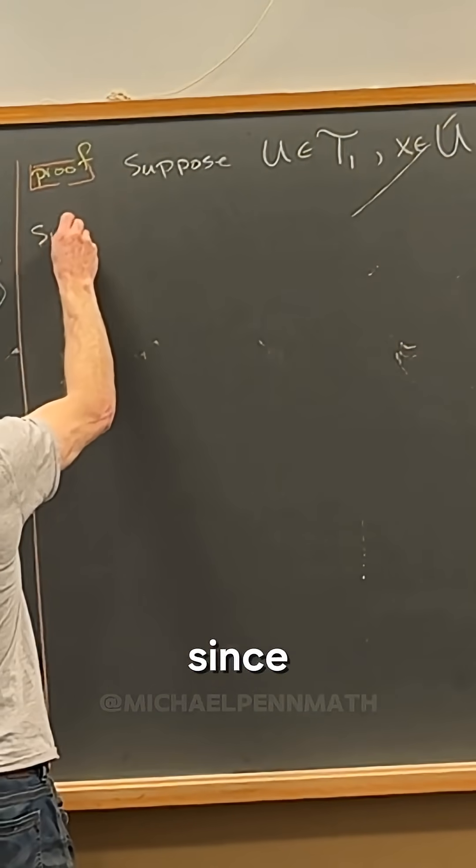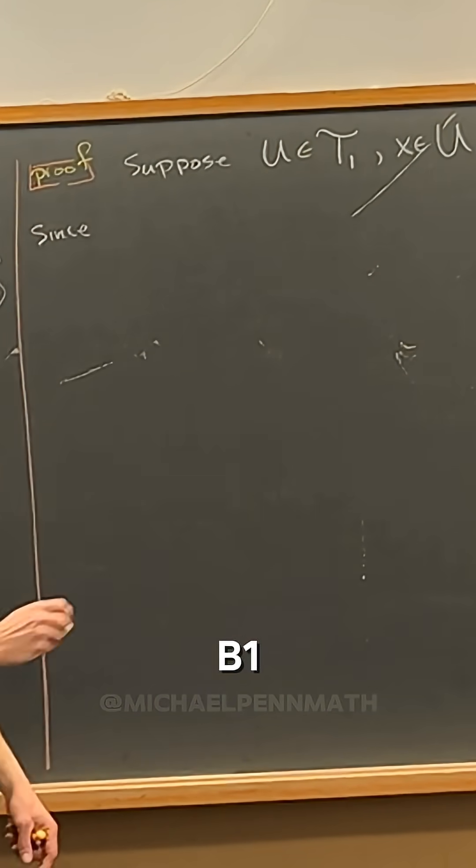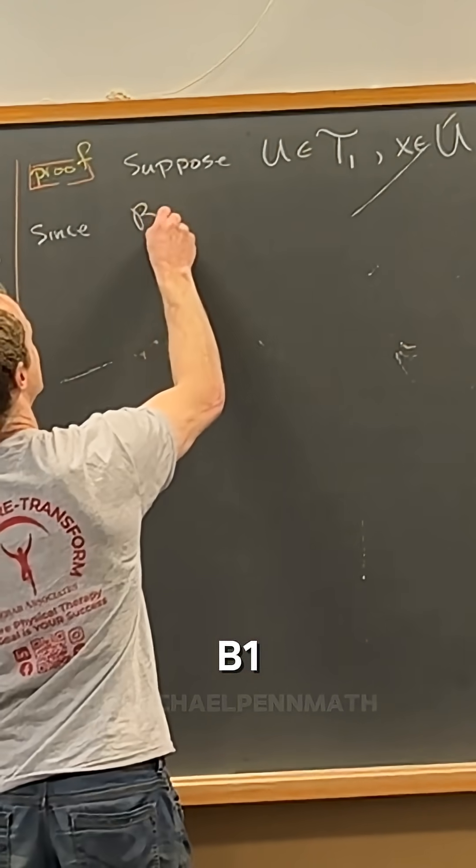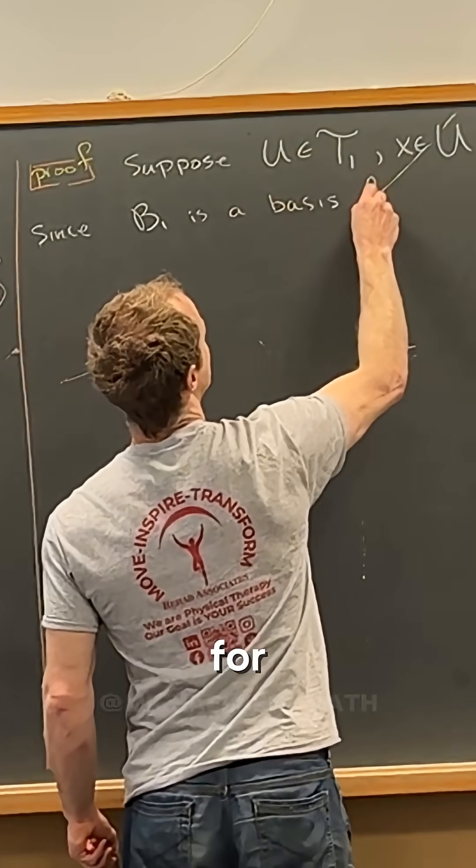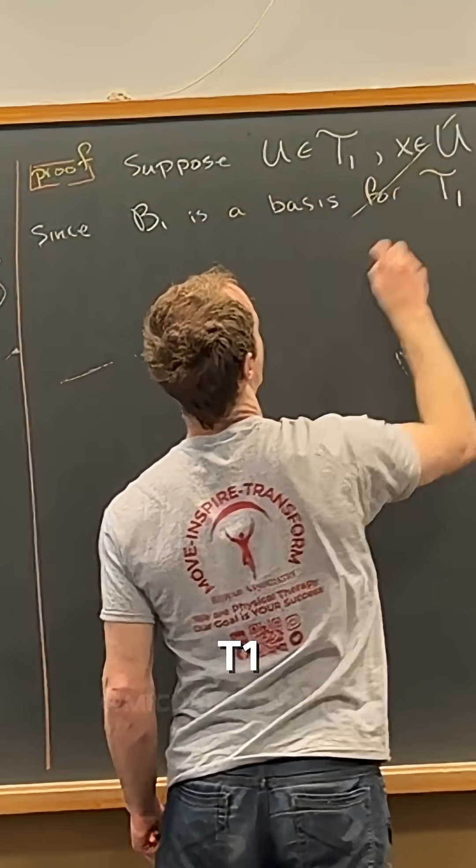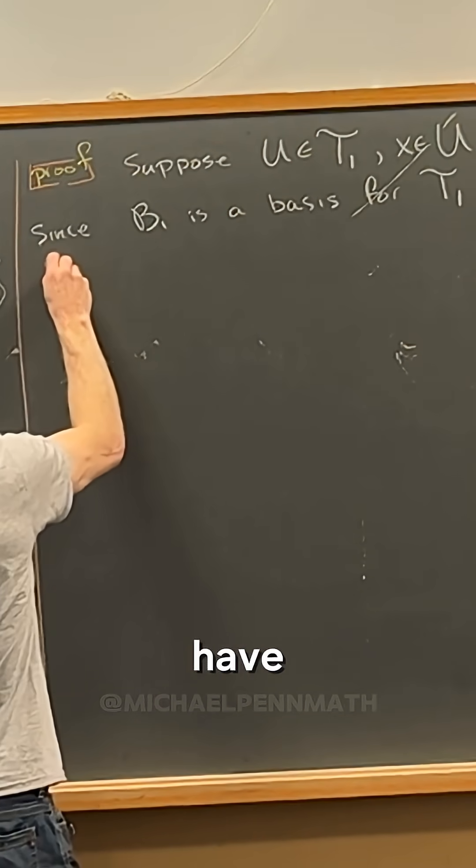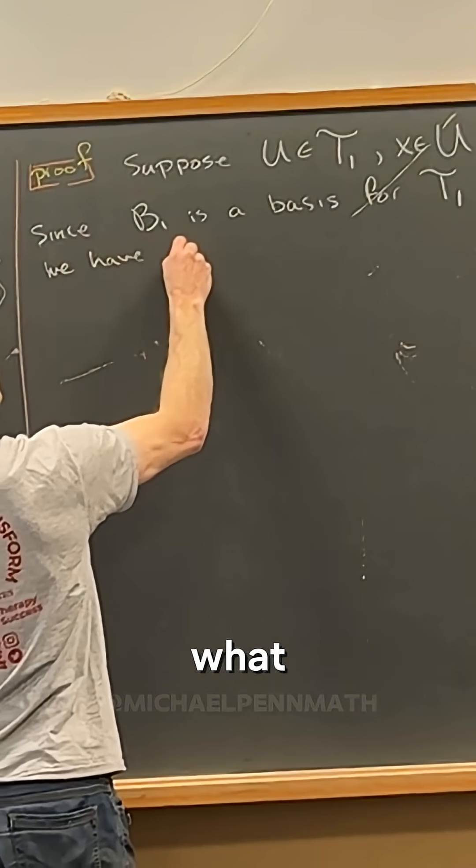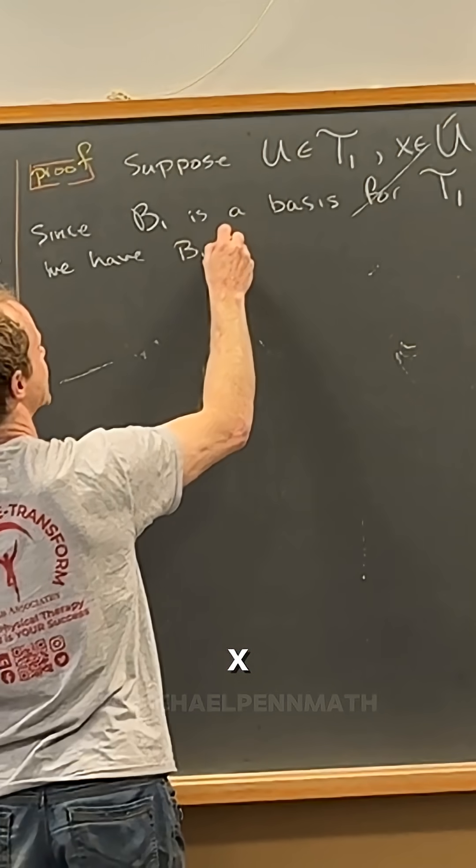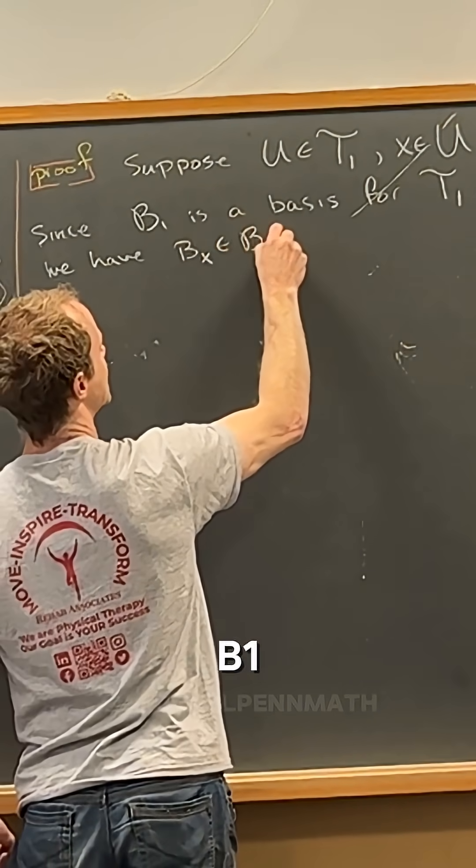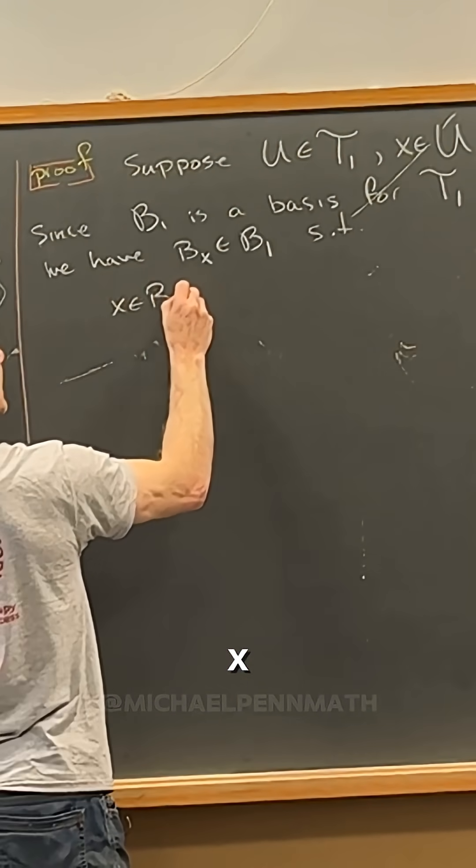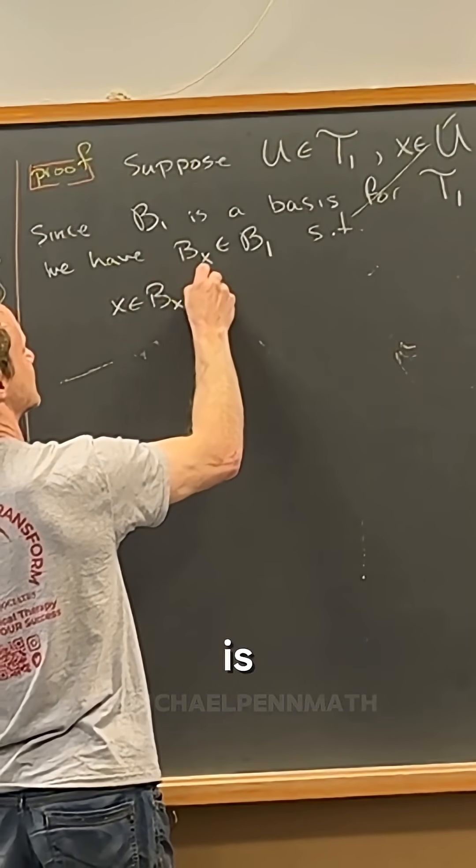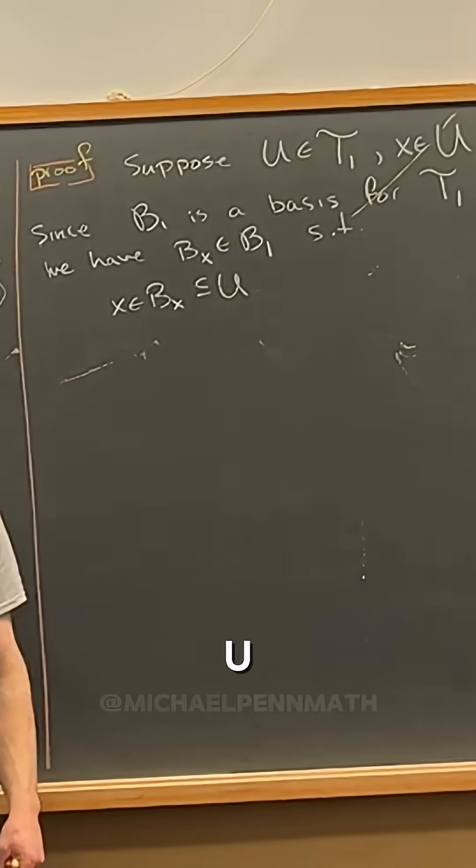So now since b1 is a basis for t1, we have what I'll call little b sub x inside of b1 such that x is in little b sub x, which is contained inside of u.